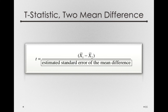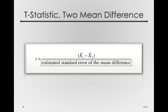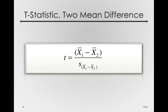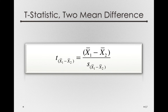The denominator is the estimated standard error of that numerator — that is, over repeated samples, what types of differences between independent sample means are we likely to get? For now, let's give it its proper notation: s subscript x-bar 1 minus x-bar 2, the standard error of the two-mean difference. And this is our two-sample, or two-mean-difference t-statistic: t for x-bar 1 minus x-bar 2.